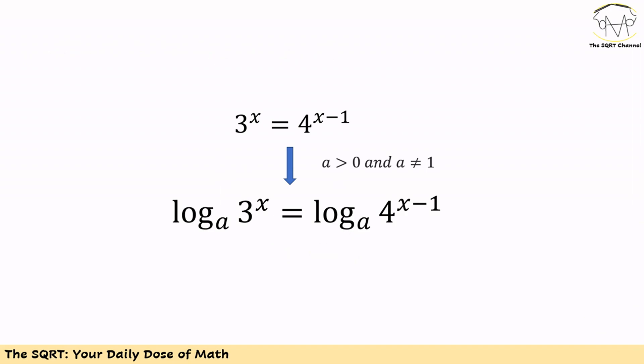To solve this problem we are going to get log in base a from both sides. Then we are going to have log of 3 to the power of x in base a is going to be equal to log of 4 to the power of x minus 1 again in base a.